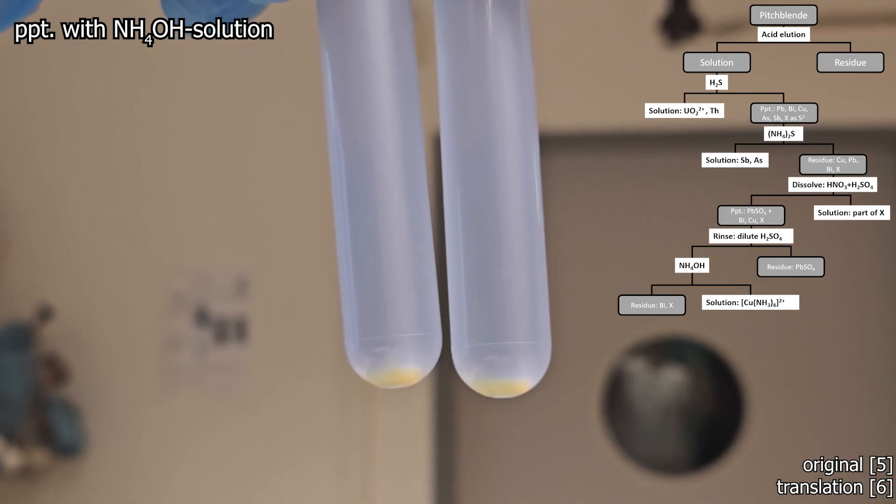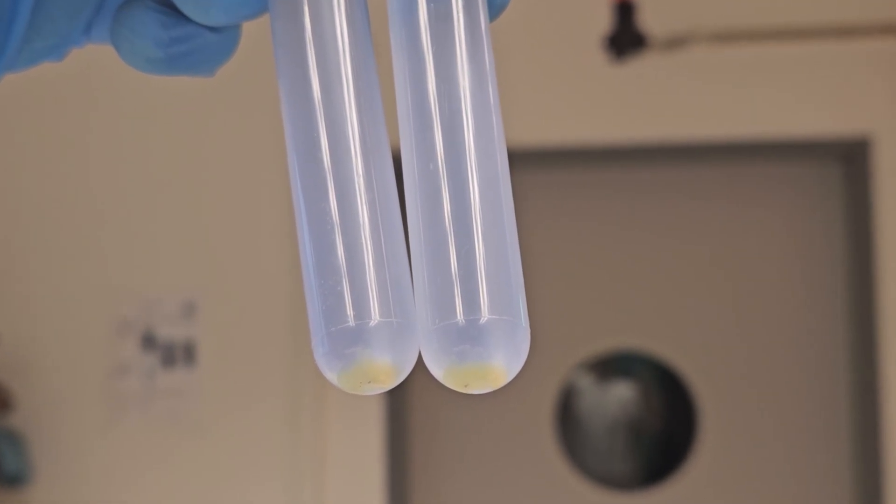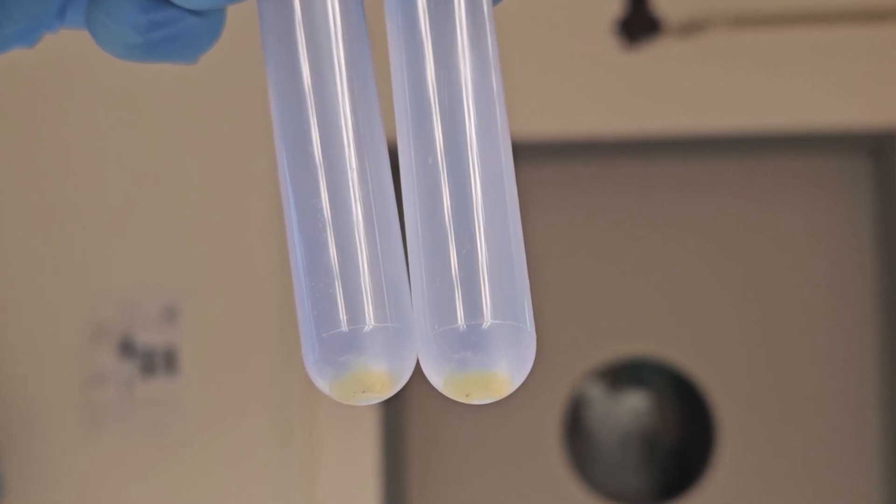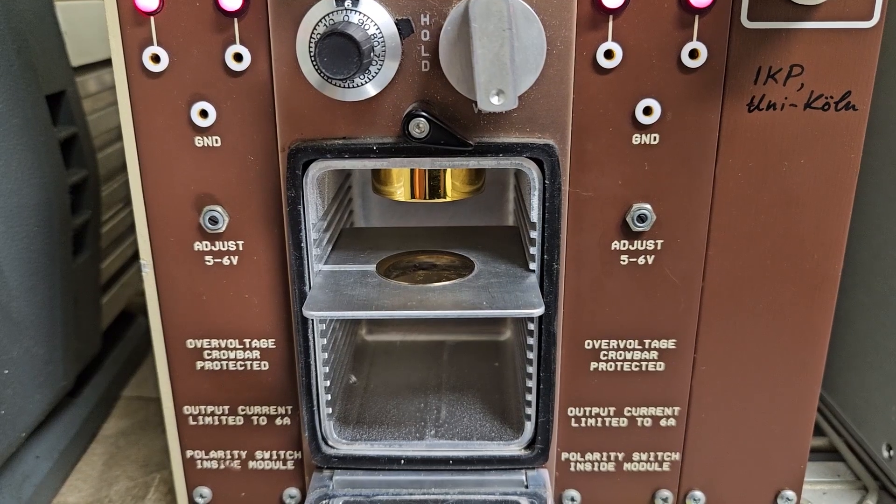I just wanted to show you this because we started with bismuth trihydroxide which is white and ended up with a yellow solid. You might be familiar with this yellow color coming from bismuth sulfite in the 5+ oxidation state.